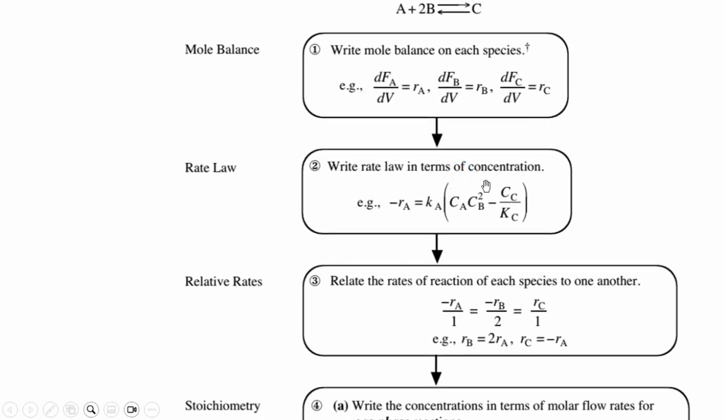Since it's a reversible reaction, the term will be a bit different. That -rA = kCA·CB².